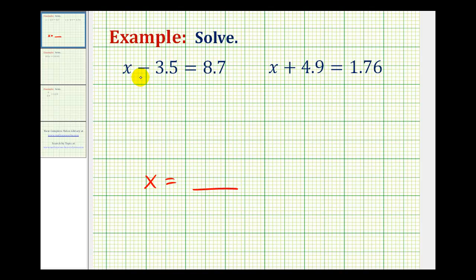Well the opposite operation of minus 3.5 would be plus 3.5. So we can add 3.5 to the left side of the equation, as long as we do the same to the right side of the equation.